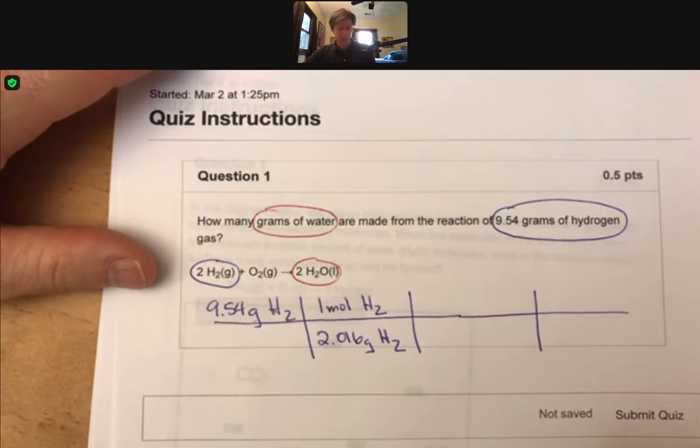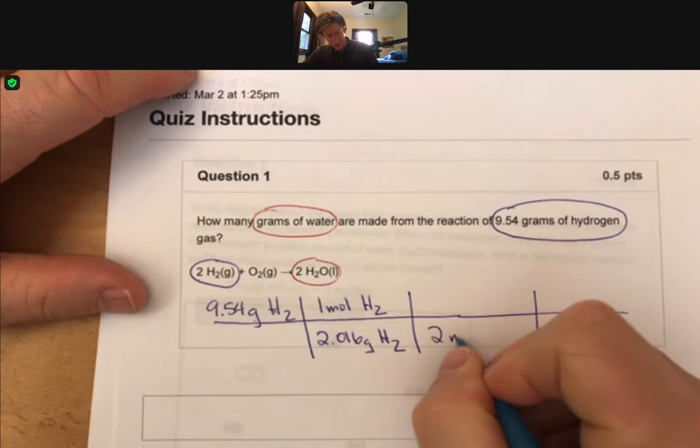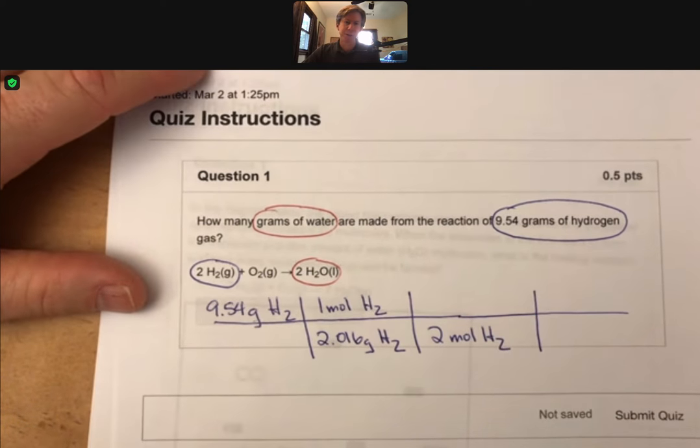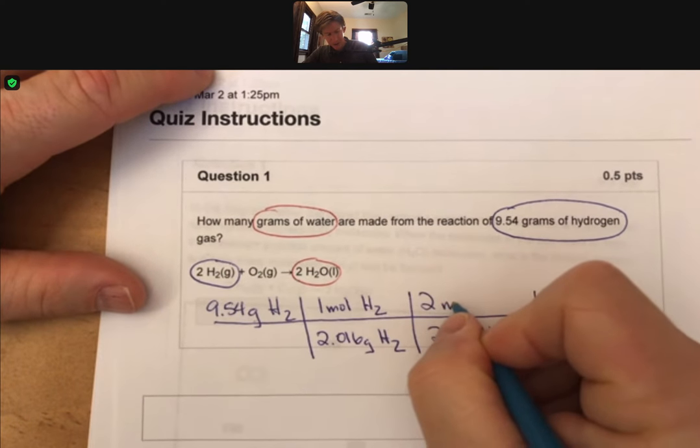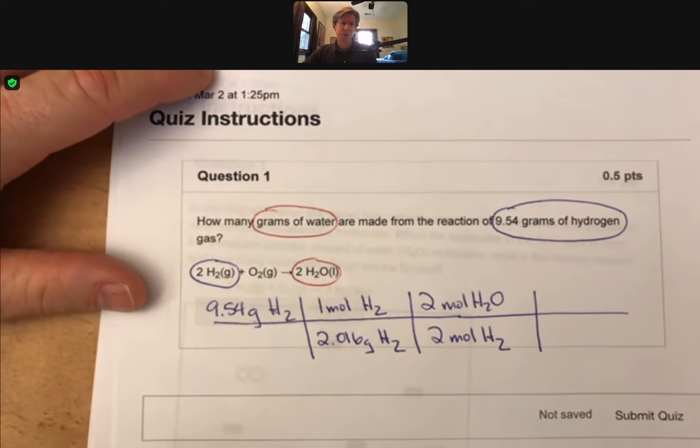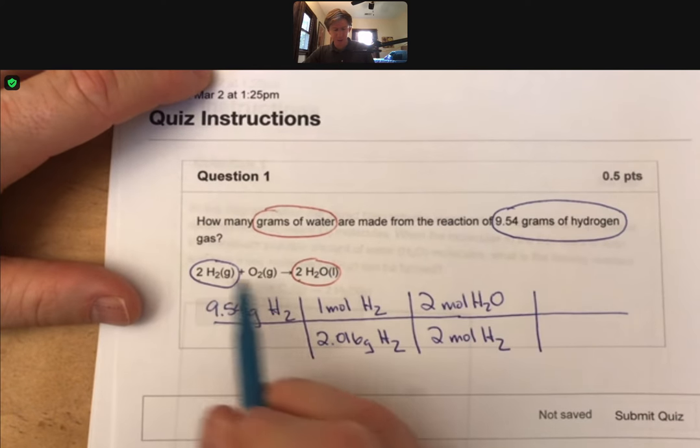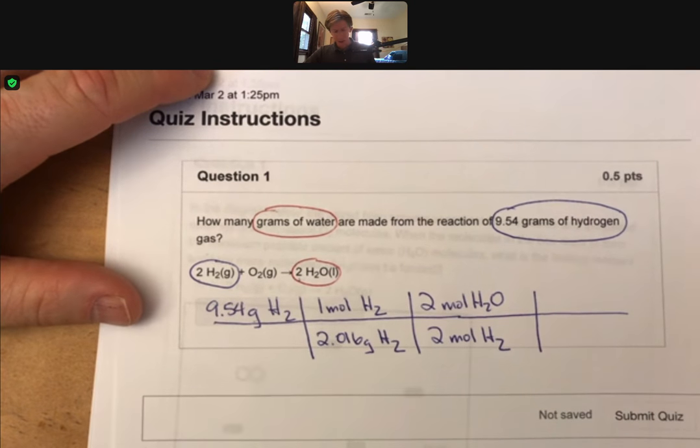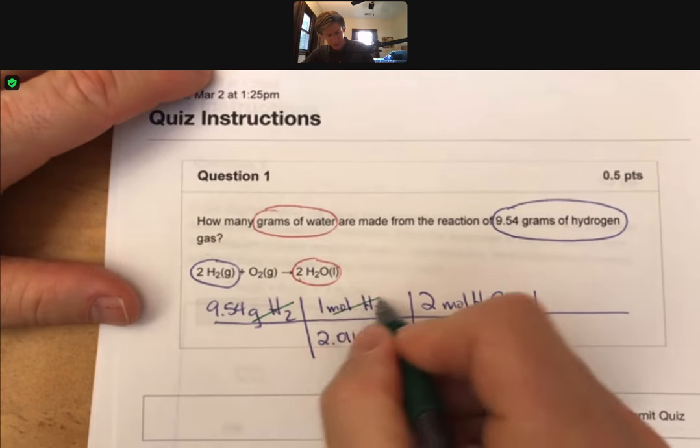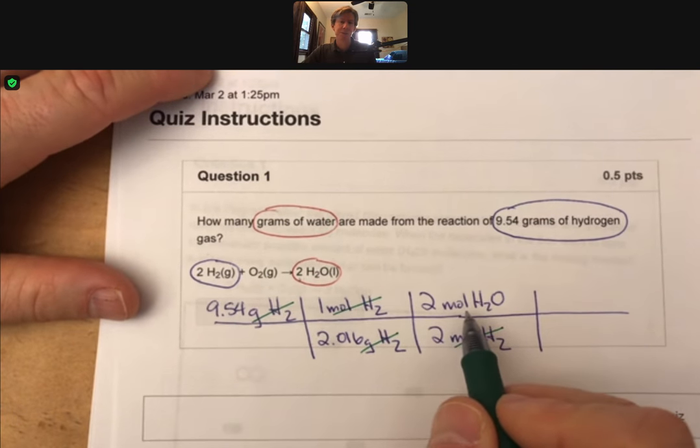And here, the mole-to-mole conversion factor is going to use the coefficients for every two moles of hydrogen reacted. And we don't write the reacted part usually. We have two moles of H2O, in this case liquid, produced. So, this is our mole-to-mole conversion factor built from coefficients in the balanced reaction. If you're playing along at home, unit-wise, we've canceled out our units of grams of H2. We've canceled out our units of moles of H2. And currently, our answer is in moles of H2O.